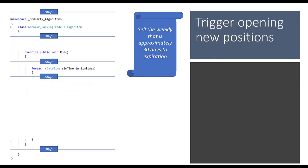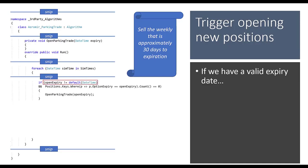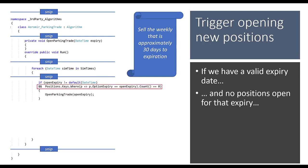We start a new method called OpenParkingTrade, passing it an expiry date. First, check if the expiry date is still the default value — if so, we didn't find anything and bail out. Then we look through all open positions for this expiry date. If that list has a length of zero, there's no position open and we should open a new trade.